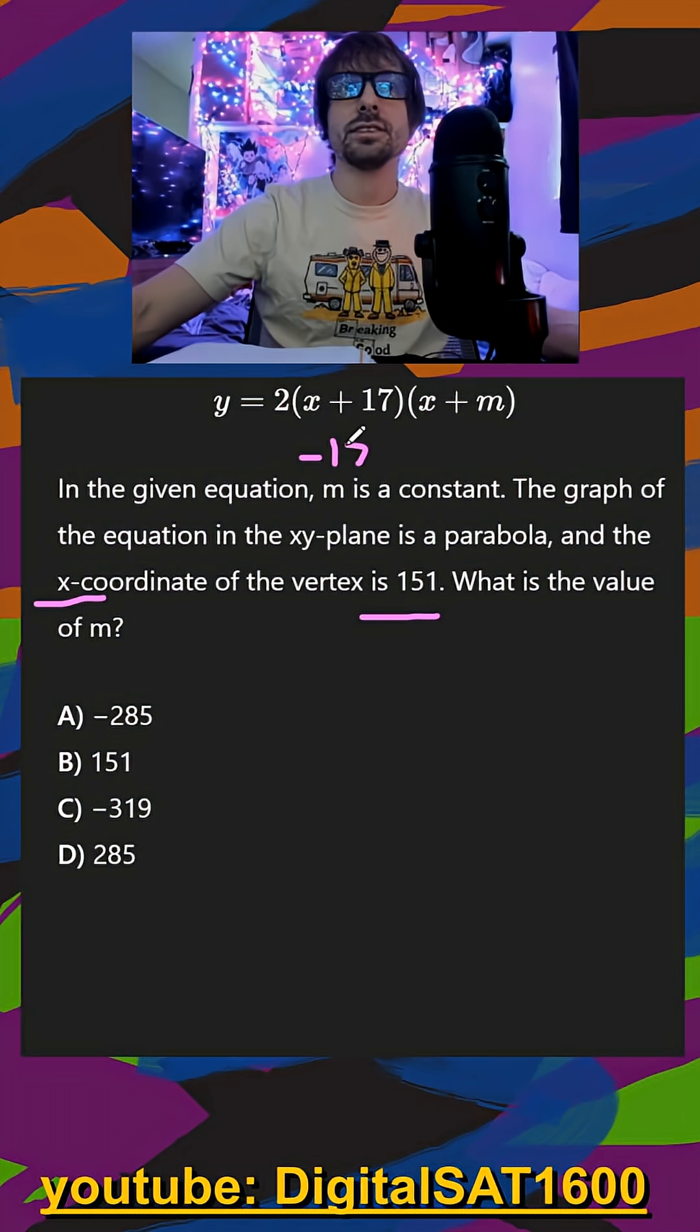My two x-intercepts are negative 17, because that'll get us to zero for the y. And then negative m would also get us zero for the y.